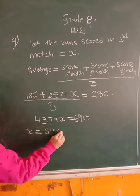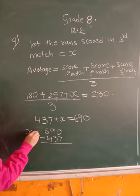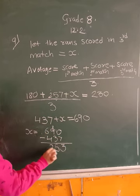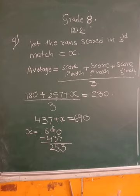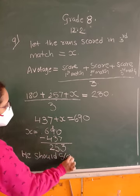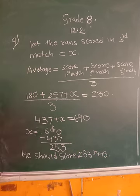So X will equal 690 minus 437. Carry out the subtraction. Here it will be 3, here it will be 5. 253 is the score of the 3rd match. So he should score 253 runs in the 3rd match. Let's go to the next problem.